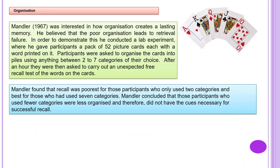Organisation. Mandler in 1967 was interested in how organisation creates a lasting memory. He believed that poor organisation leads to retrieval failure. He conducted a lab experiment where participants were given a pack of 52 picture cards, each with a word printed on it. Participants were asked to organise the cards into piles using between two to seven categories of their choice. After an hour they were asked to carry out an unexpected free recall test. Mandler found that recall was poorest for those who used only two categories and best for those who used seven, concluding that fewer categories meant less organisation and therefore fewer cues necessary for successful recall.